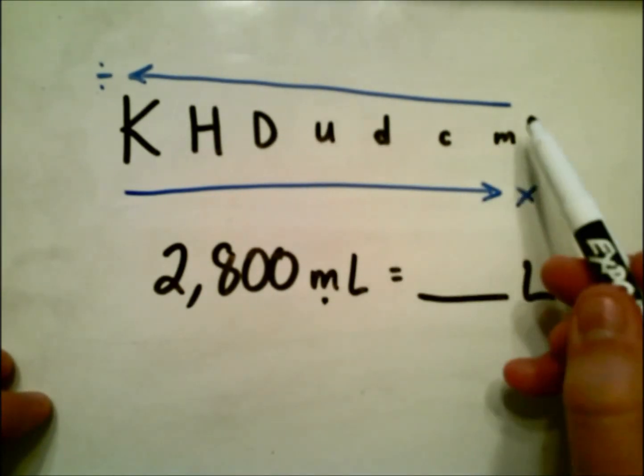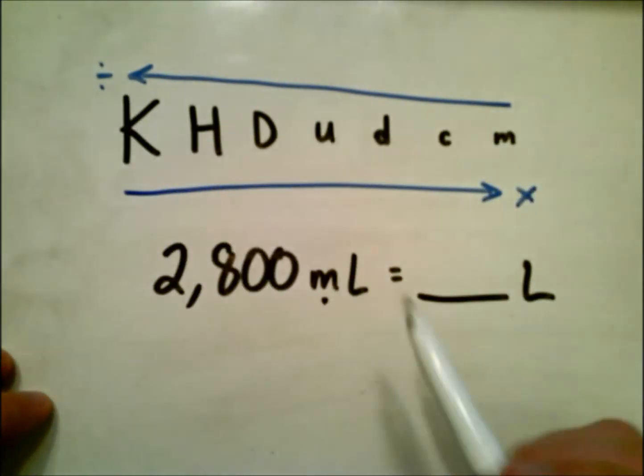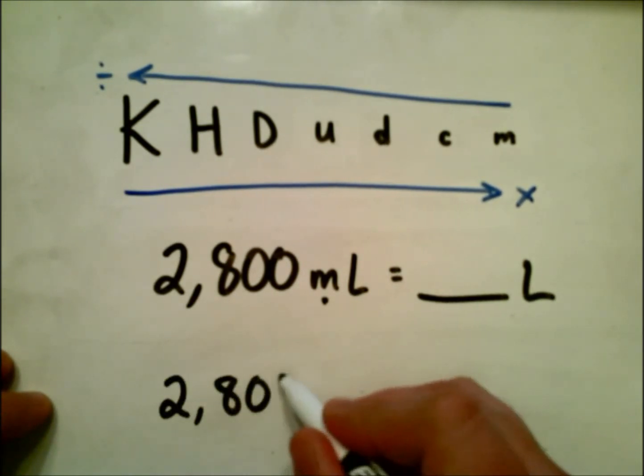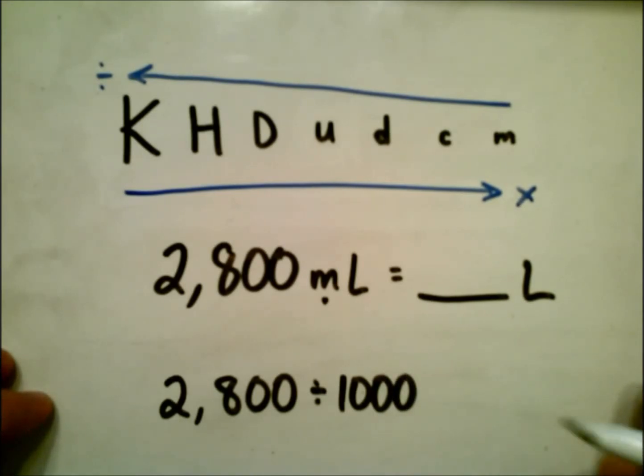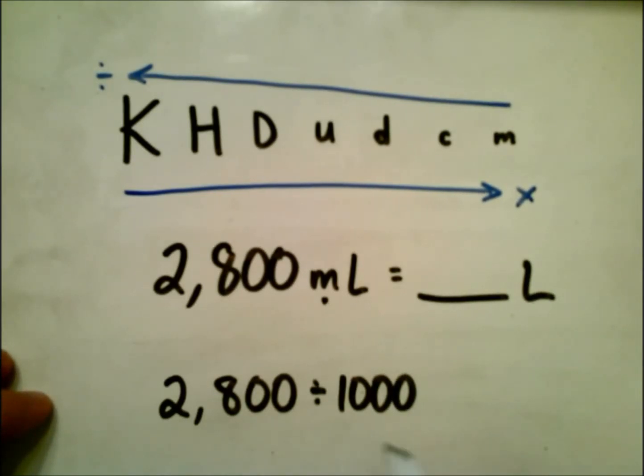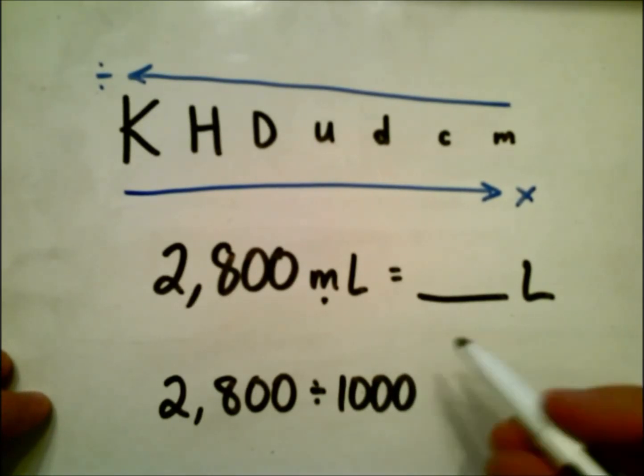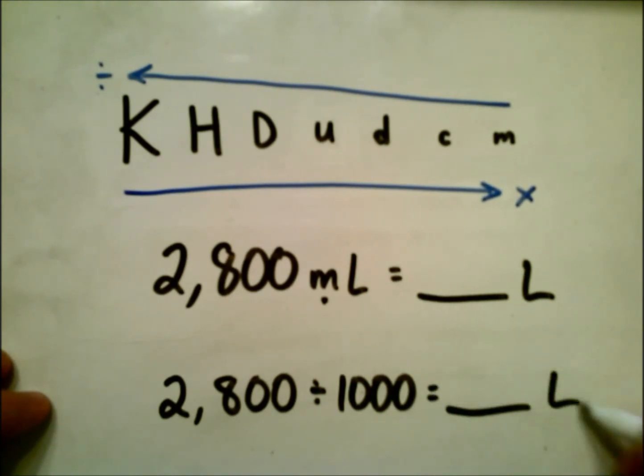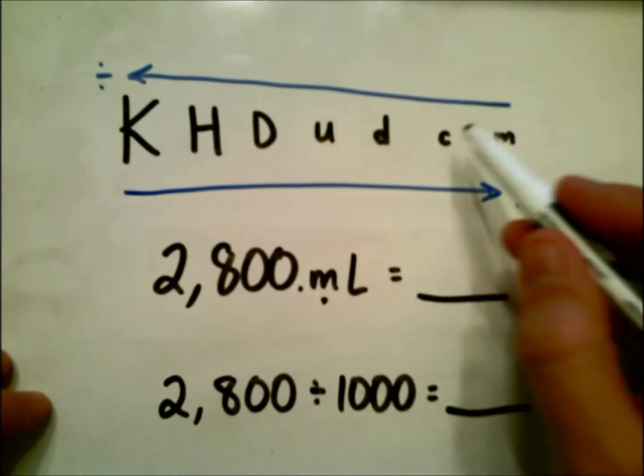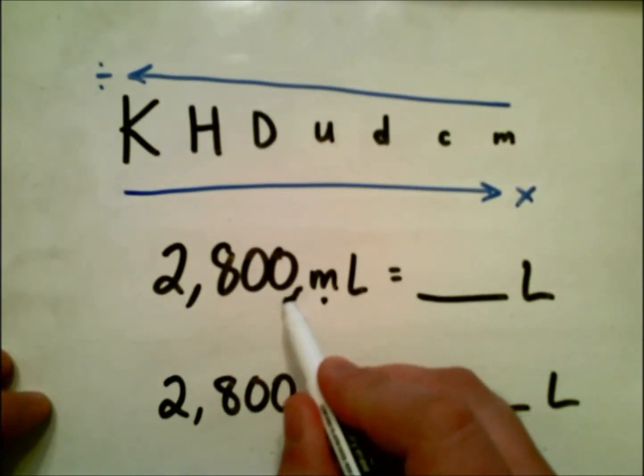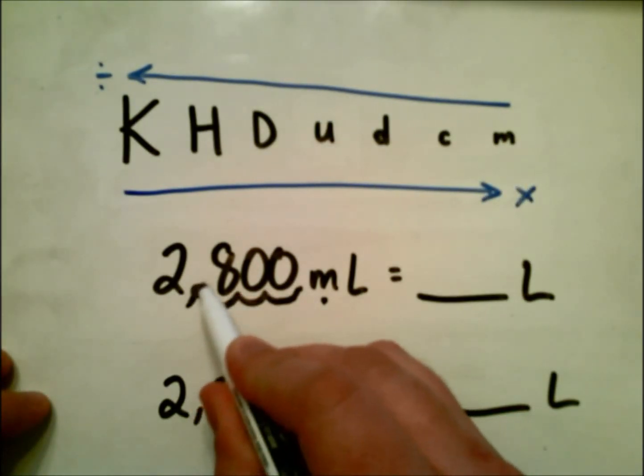We're going to move the decimal in the direction, in the dividing direction. So we need to make sure that we're writing our problem out exactly how we would, which is 2800 divided by 1000. Or we, once again, can move the decimal three times to the left with the number of jumps that we had. So we can move it once, twice, three times.